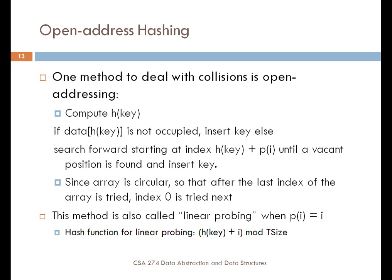If we use P(I) equal to I — just incrementing a counter by one — this method is called linear probing. The idea is that when we search forward, if position I is occupied we add one to I and check the next location in the array. Using linear probing, the hash function looks like: hash value plus I, mod the size of the table.